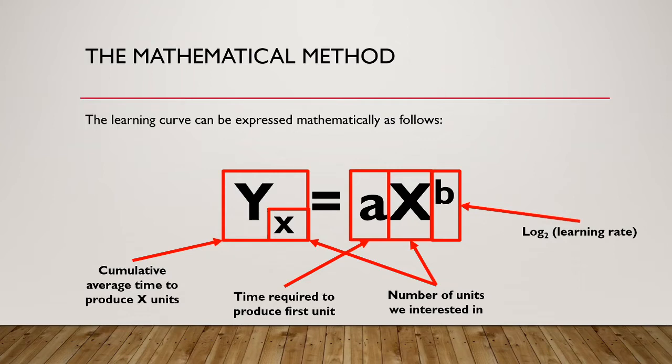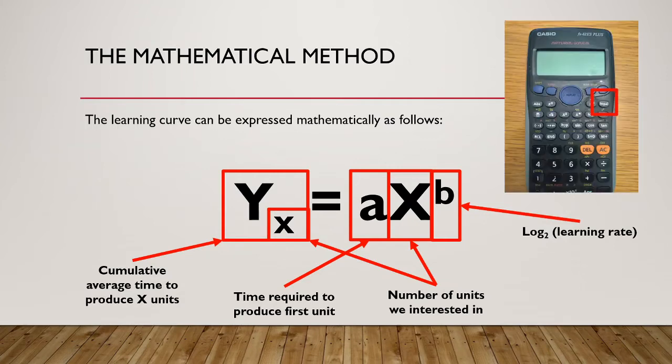The value of b can be calculated in two ways. If you have a calculator that allows you to specify the base, you can use that directly. Alternatively, you can take the log of the learning rate and divide it by the log of 2. It is important to remember that we need to enter the learning rate as a decimal rather than as a percentage.